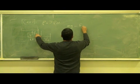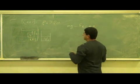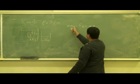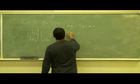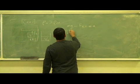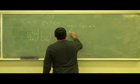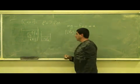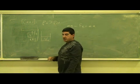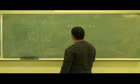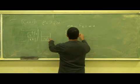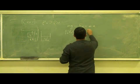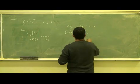So mg minus F_b equals ma, and the object begins to accelerate downward. mg equals the density of the object times the volume of the object times g, and the buoyant force equals the weight of the displaced fluid, which equals the density of the fluid times V₀ times g.